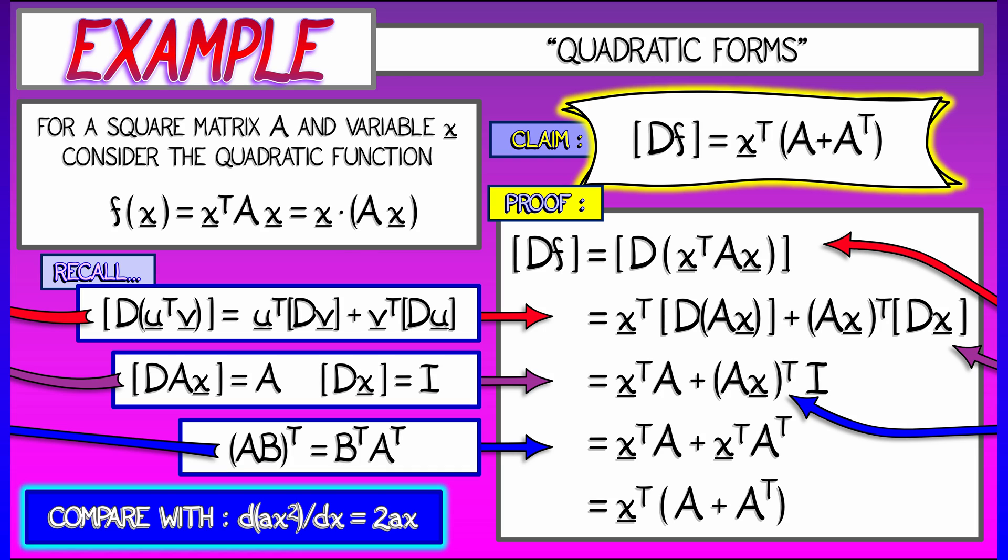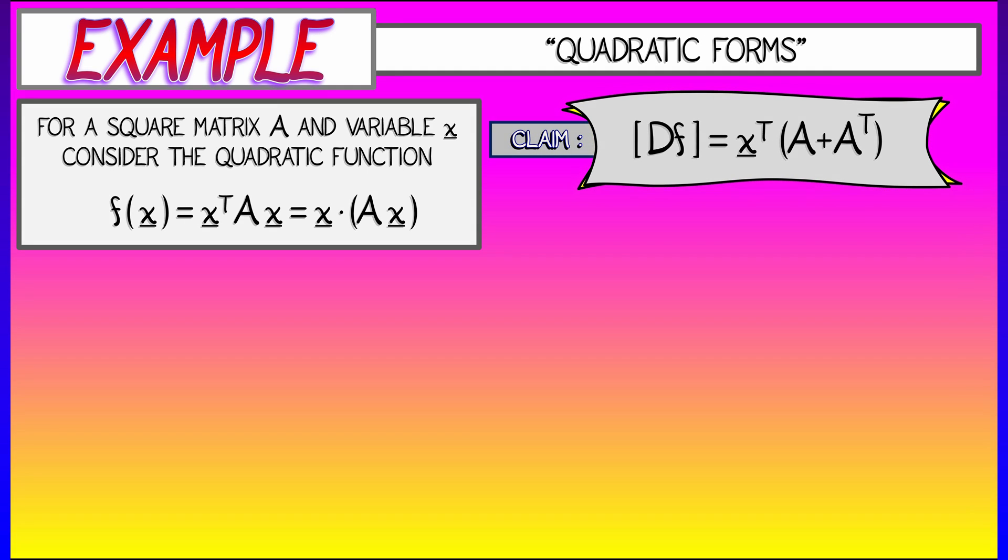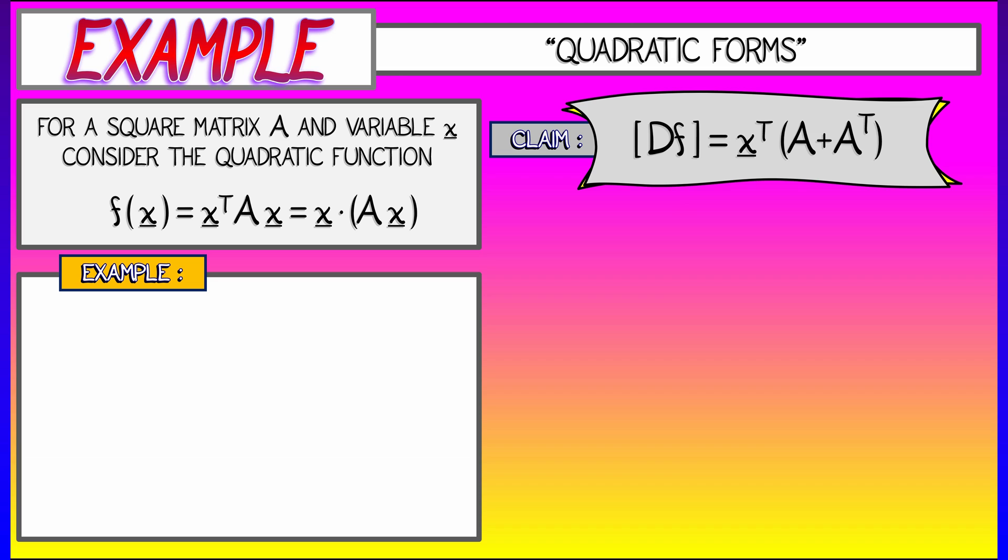But does it really work? Let's think about it. Let's look at a particular example. Let's say a 2 by 2 case, where things are easy. Let's say that A is the matrix given by 2, negative 1, 9, 3.